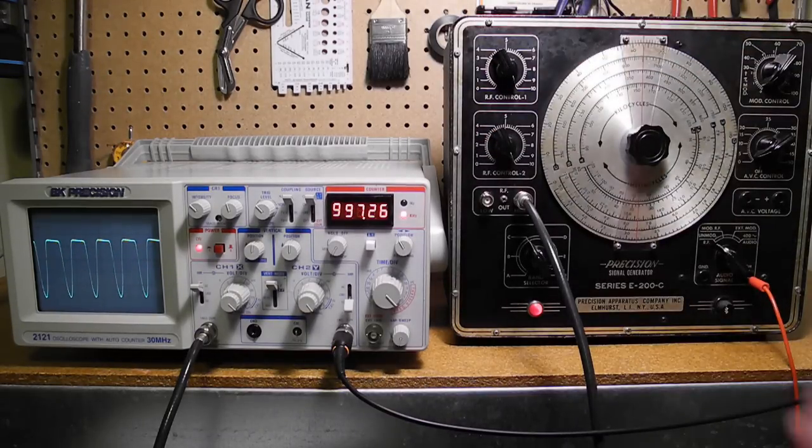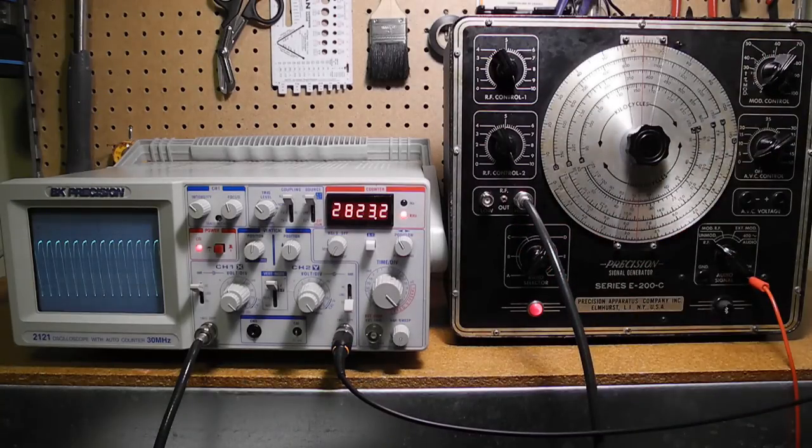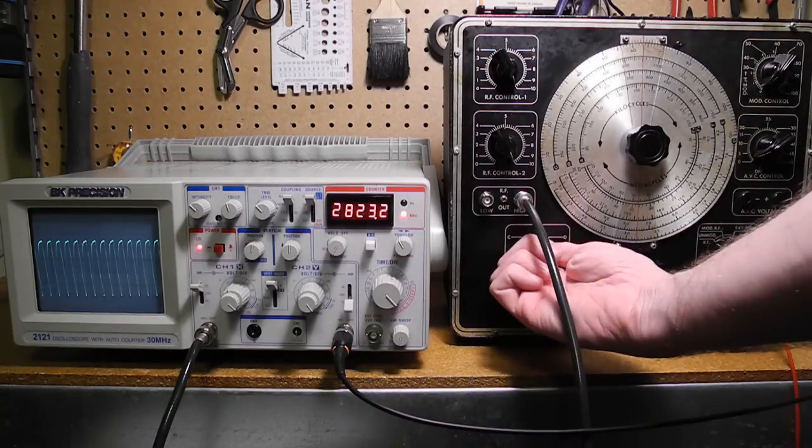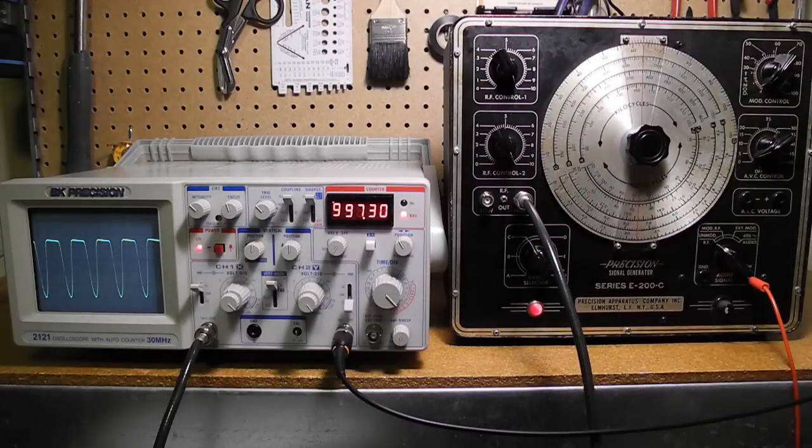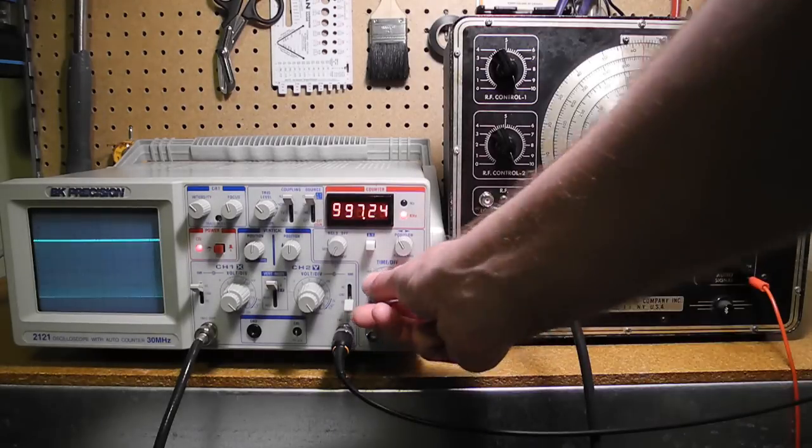If we switch to band D, the output goes to about 2.8 megahertz. If we switch the mode to modulated RF, we can amplitude modulate the signal. Let's turn the sweep frequency of the scope down so we can see the RF envelope.